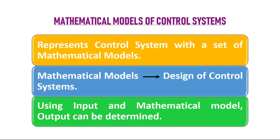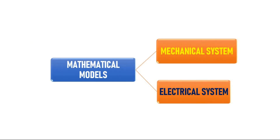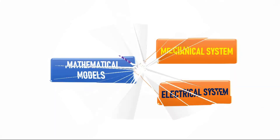If the input and the mathematical model are known, then it is possible to determine the value of the output. The types of mathematical models are broadly classified into two types: one is a mechanical system and the other is an electrical system.